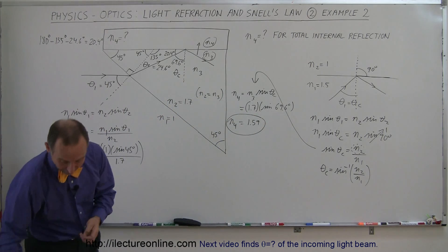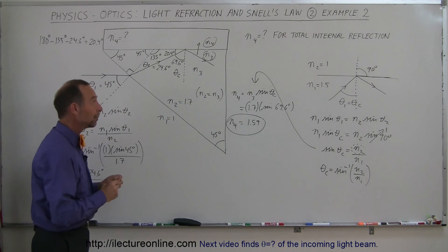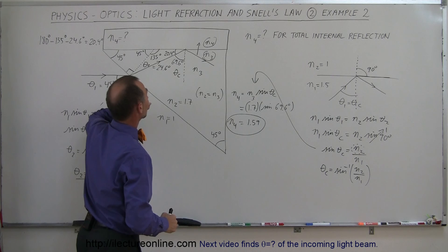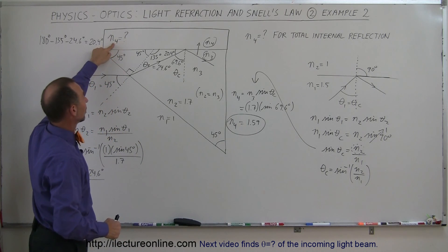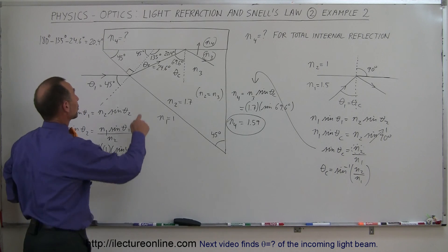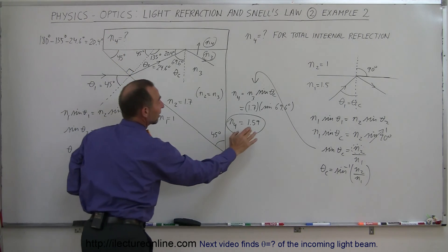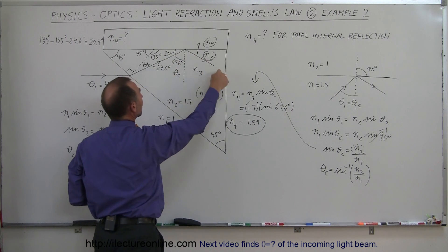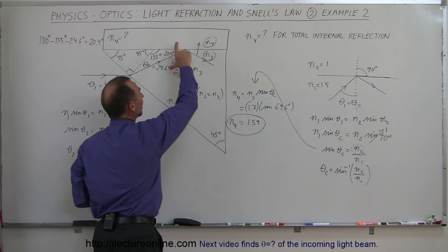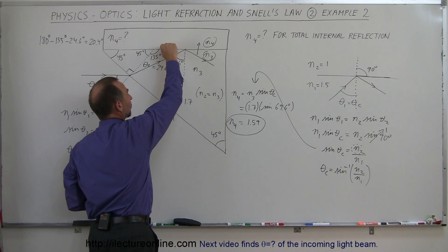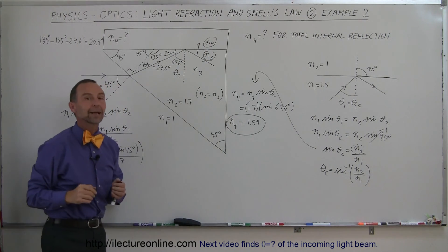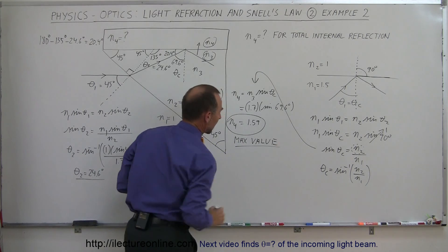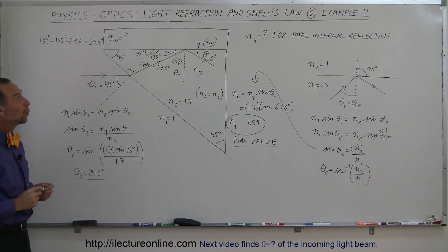Is that a maximum or minimum value? Remember, for total internal reflection the difference between the indices must be as large as possible, meaning N4 should be as small as possible. So N4 equals 1.59 is a maximum value — this value or anything less will allow total internal reflection. If N4 becomes too large and the difference between the two indices becomes too small, the light will cross the boundary and not be reflected. So this must be a maximum value. And that is how we do that type of problem.